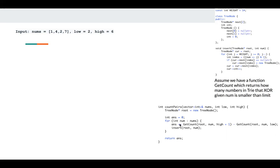For each node, I just getCount, pass high plus one, then minus getCount pass low here.